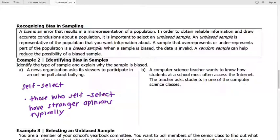So that's why these are kind of biased. I'm going to just write those who self-select have stronger opinions typically. So it's not generally representative of the population of the viewers. All right. Part B, we've got this. A computer science teacher wants to know how many students, or how students at a school, most often access the internet. And the teacher asks students in one of the computer science classes. So again, think about what type of sample this is. This is a convenient sample.